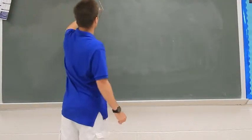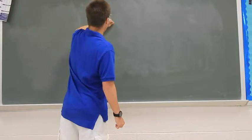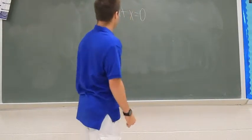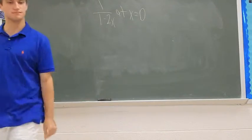Alright, Lenny. So, for your sample problem, I want you to find the series for 1 over 1 minus 2x at x equals zero. Alright.